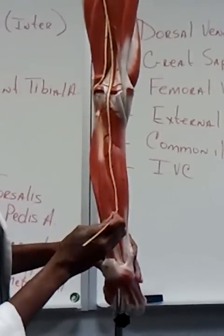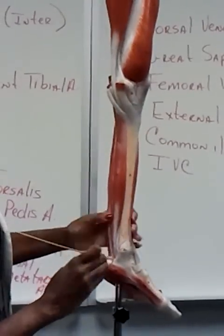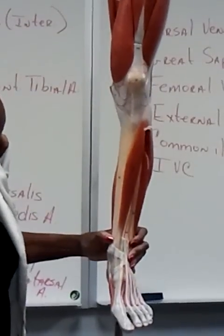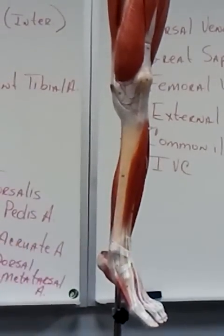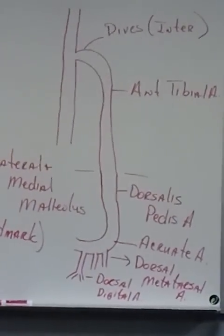Posterior tibial runs on down and then it comes out underneath the foot. Then it's going to branch to your medial plantar artery and lateral plantar artery, and that's where it stops. That's where we're going to stop at for this class.